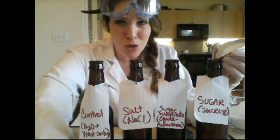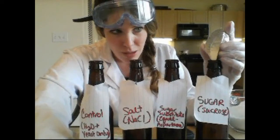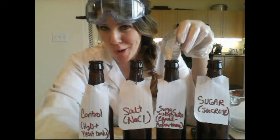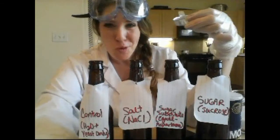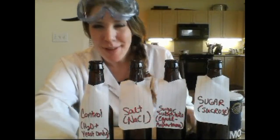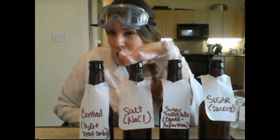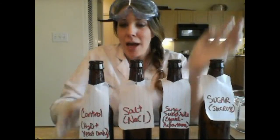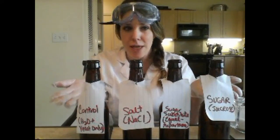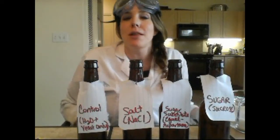Here goes 4 grams of sugar into the sugar bottle — try to be careful not to let it spill. 4 grams of Equal into the sugar substitute bottle. 4 grams of salt into the salt bottle. Now each bottle has 7 grams of yeast and 4 grams of their respective substance, except for the control which just has yeast.